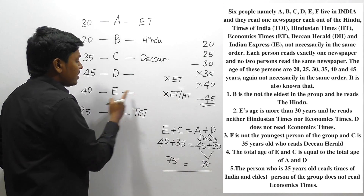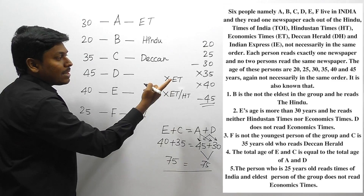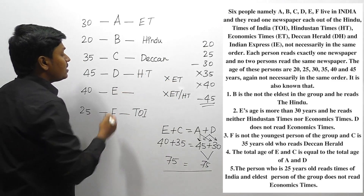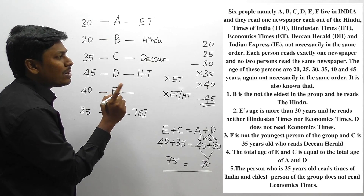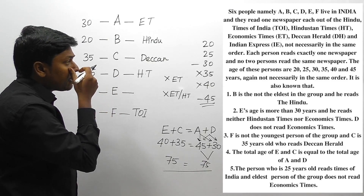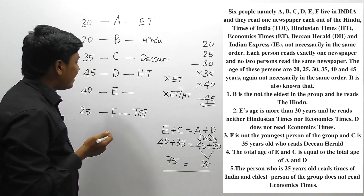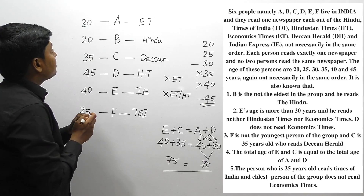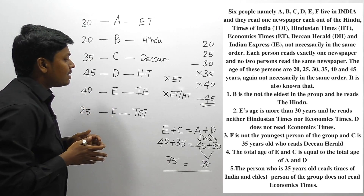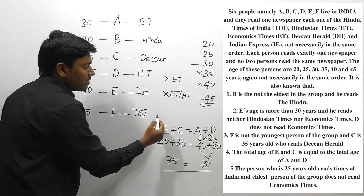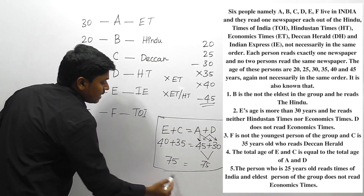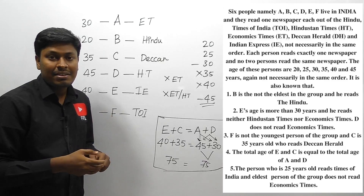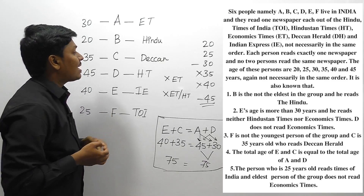We already know E is not reading Economic Times and not Hindustan Times, so the remaining paper Hindustan Times should be read by D. The remaining paper, Indian Express, should be read by E. Finally, we have solved this interesting puzzle. The key was to substitute the ages into the given clues to crack it step by step.